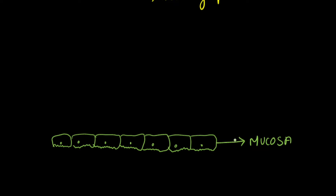If you have any doubt, just check out the link of the video on walls of GIT — it will be very useful. This mucosa forms the innermost layer of the GIT, and the mucosal cells directly remain in contact with the contents of the GIT and promote absorption.